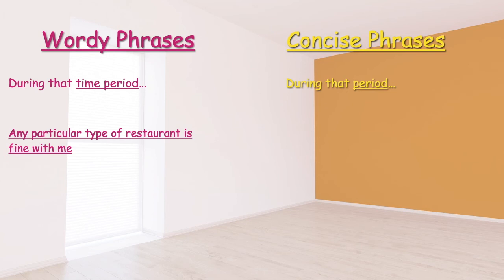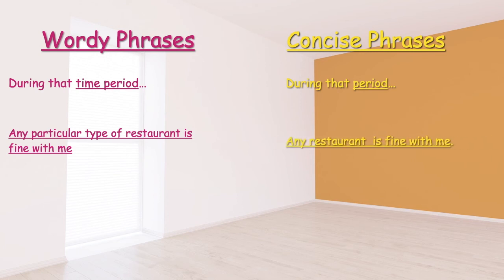Next: 'Any particular type of restaurant is fine with me.' This is very wordy. We can cut two or three words and prune it down to: 'Any restaurant is fine with me.' Straightforward. That's the goal — straightforward phrases and straightforward talking.